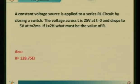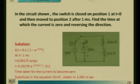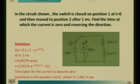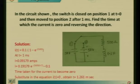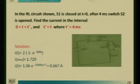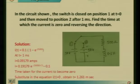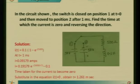The third problem: a switch is closed to position 1 at t=0 and then moved to position 2 after 1 millisecond. The circuit has a 50 V supply, R = 500 Ω, and L = 0.2 H. The expression for current at position 1 is i(t) = V/R × (1 - e^(-R/L × t)) = 0.1 × (1 - e^(-2500t)) amperes.